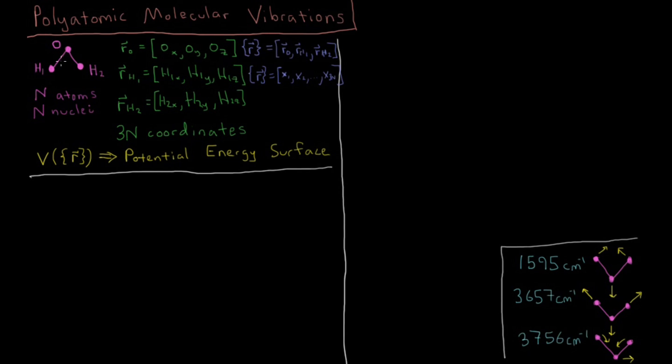So let's describe our problem. We've got a water molecule with three atoms, three nuclei. In terms of molecular vibrations we're interested in the motion and movement in the positions of the nuclei. So for the oxygen it's got three coordinates: x, y, and z in the R vector for the oxygen.